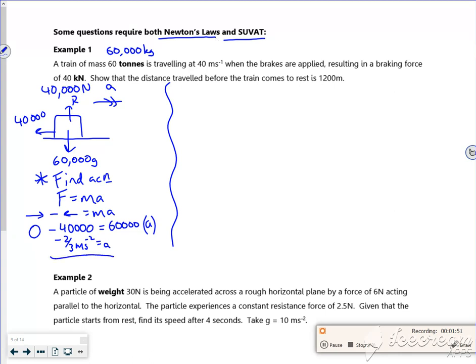It's trying to slow it down, so I'd say an acceleration of minus 2/3 or a deceleration of 2/3. Now I'm going to use this for my SUVAT because I want to find s. Show that the distance traveled before it comes to a stop is 1,200. So let's find s. My u is 40. When it comes to a stop, v is going to be zero. My acceleration is minus 2/3, and t I'm not fussed about.